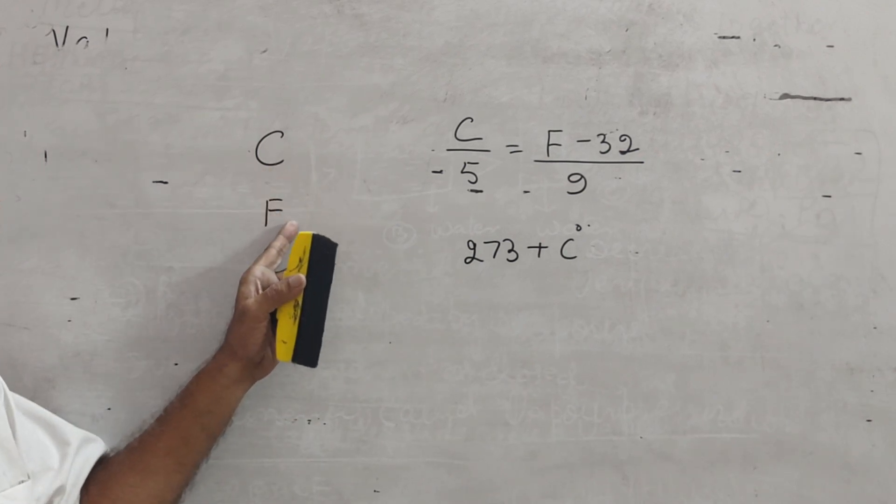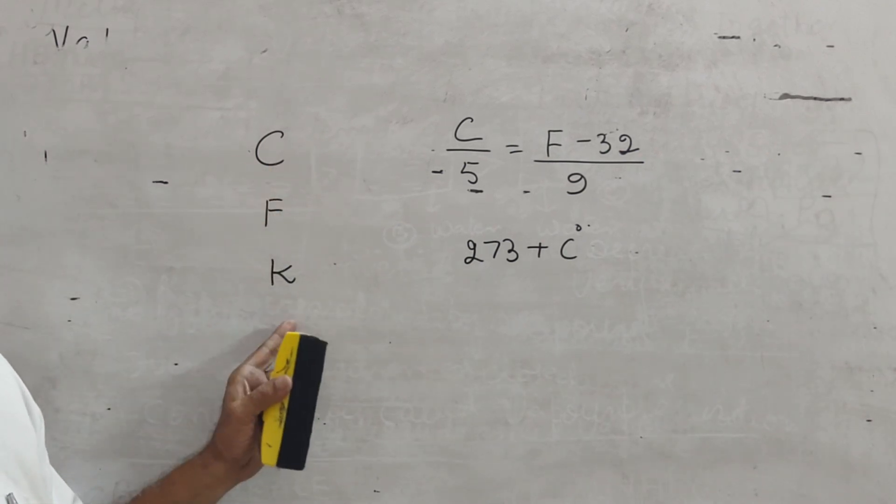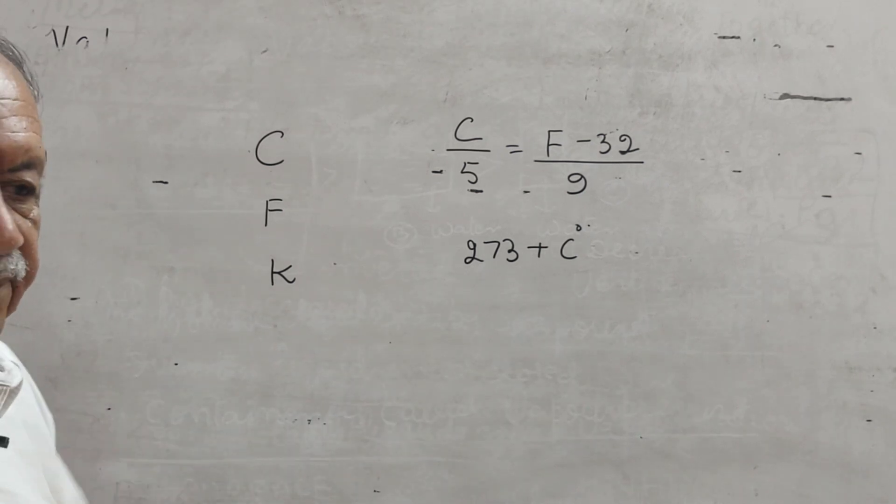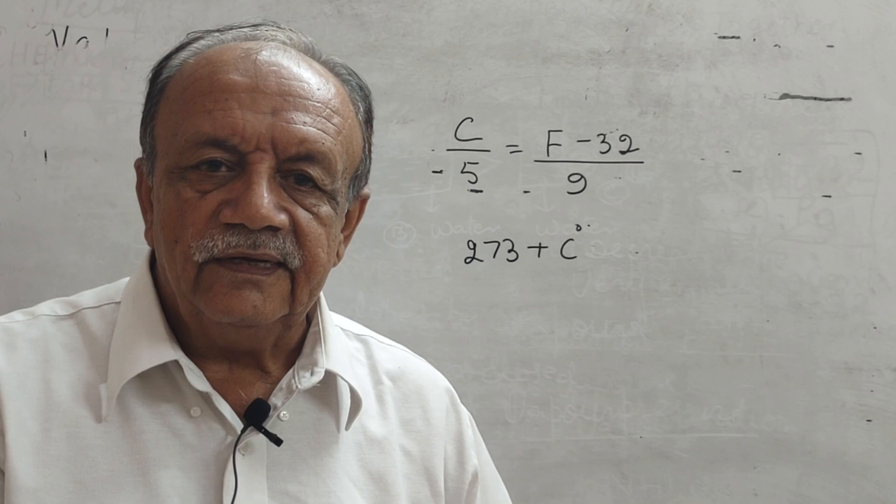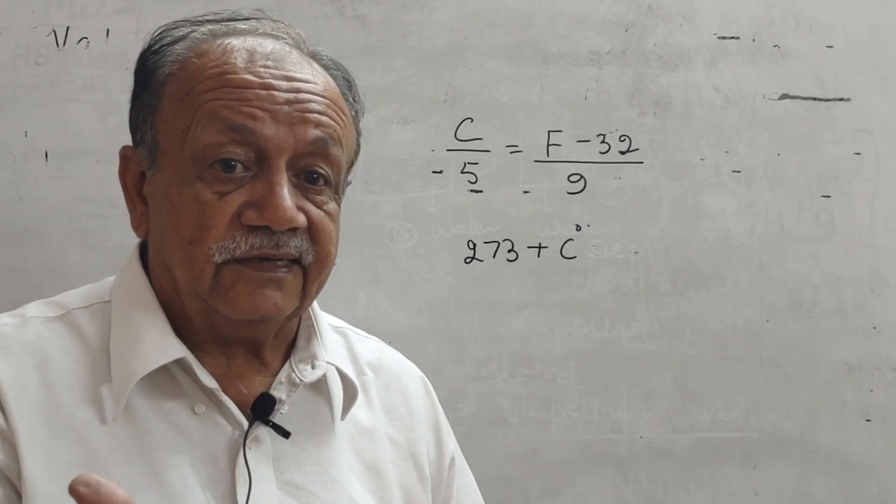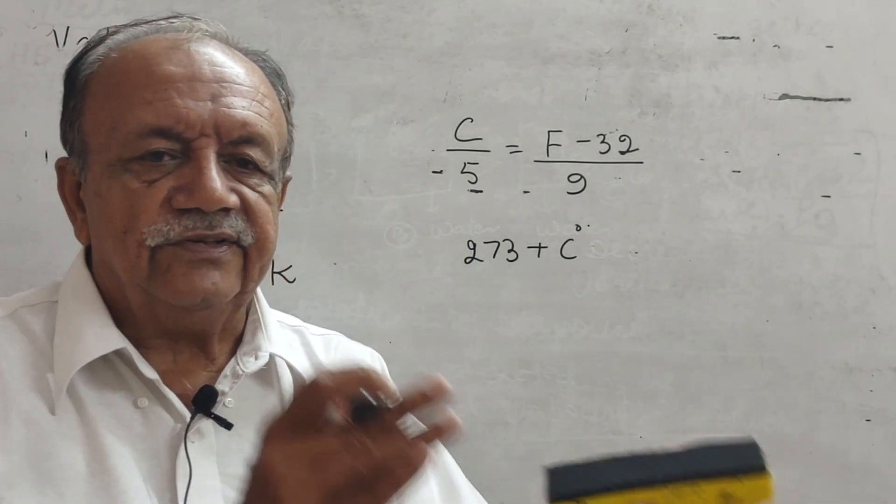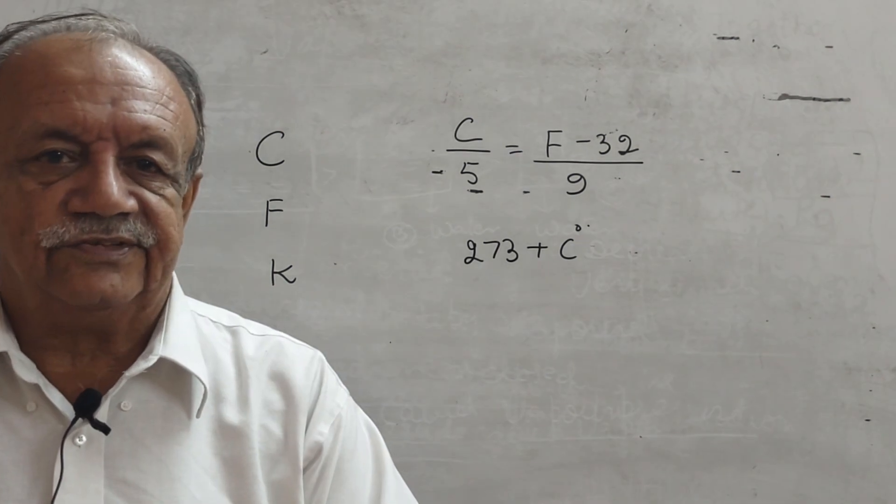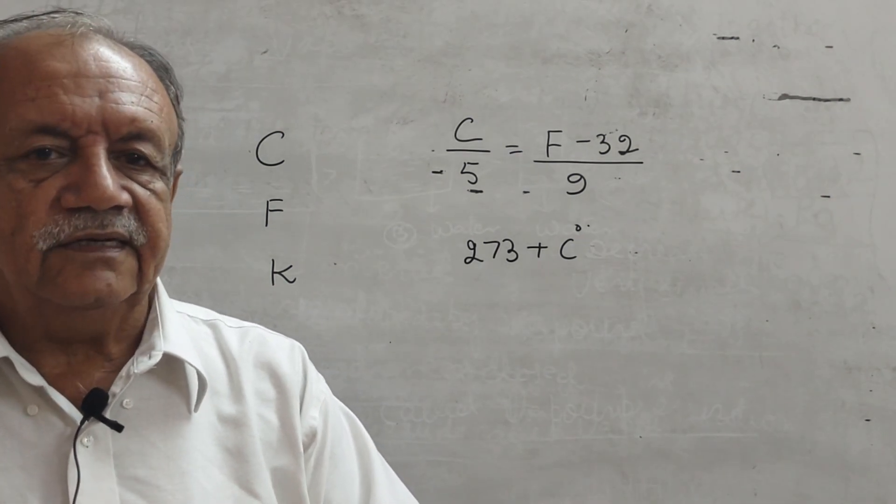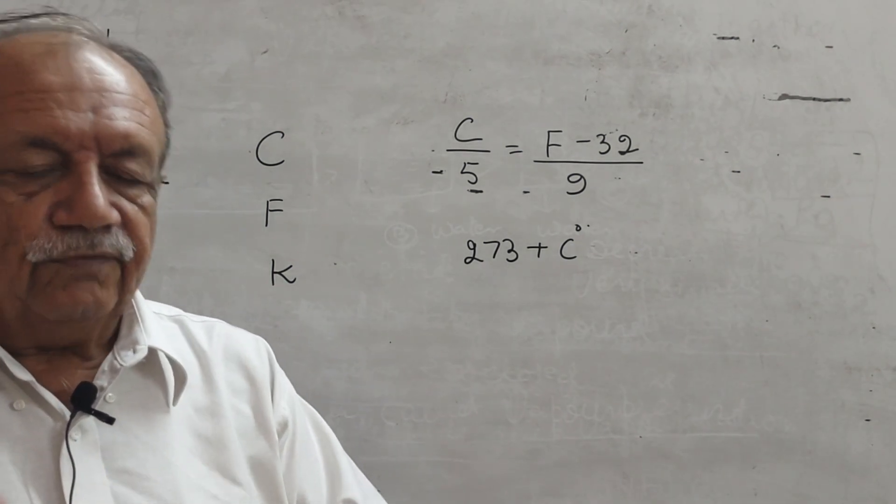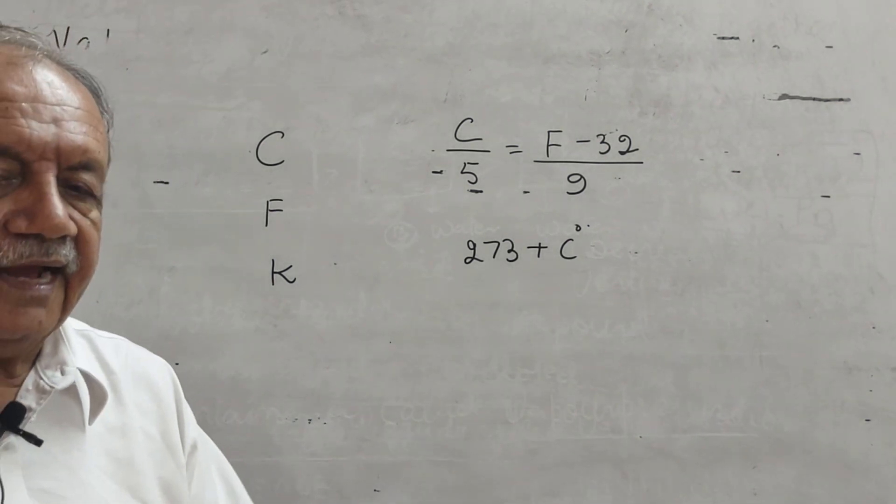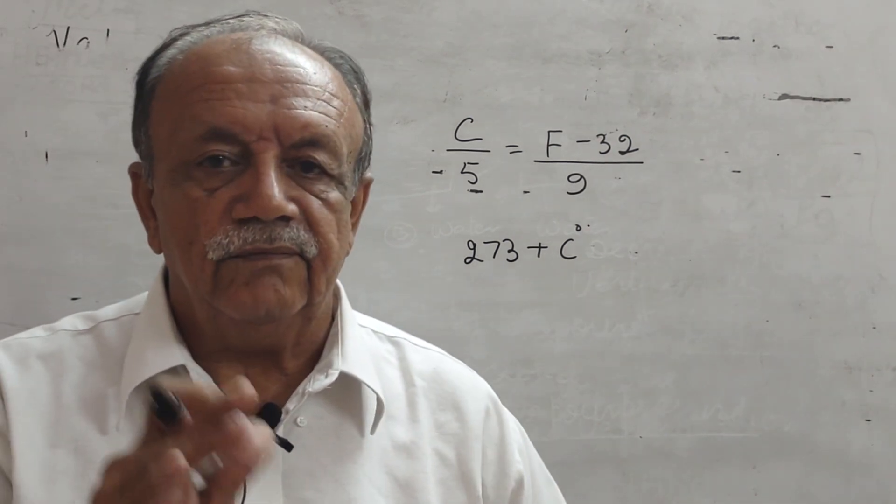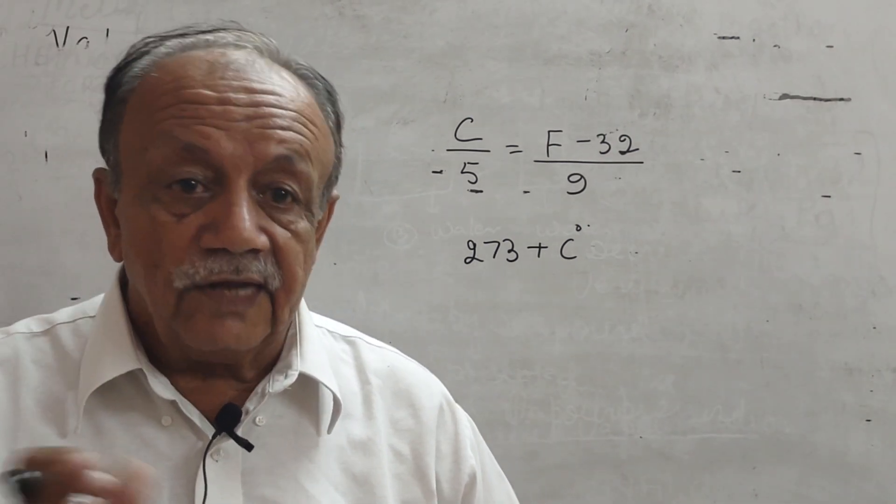Centigrade, Fahrenheit and Kelvin. Now, what is melting point? It is a temperature at which a solid melts. It is called melting point. What is boiling point? It is the temperature at which a liquid boils.